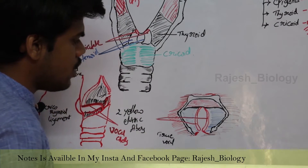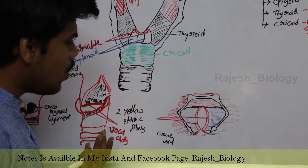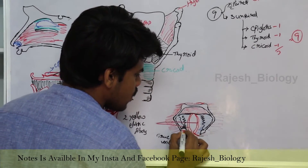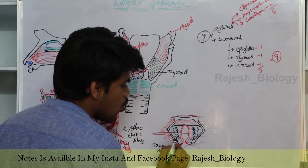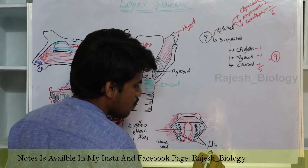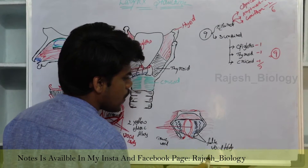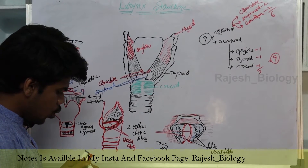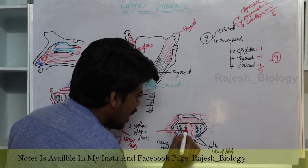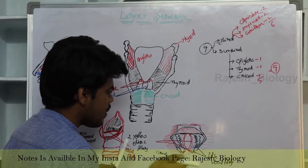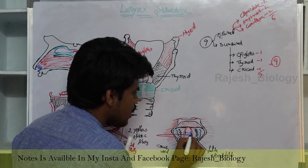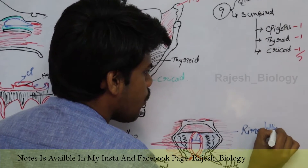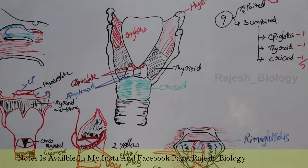They are also called true vocal folds. Whenever there is a true, there is also a false — so these are the false vocal cords, also known as false vocal folds. There are true and false vocal folds present in the larynx. The gap between the true vocal cords is known as rima glottidis.